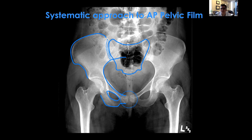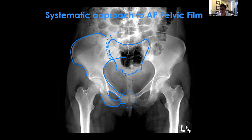También tomo en cuenta la congruencia de las líneas iliopectineal e ilioisquiática a medida que suben; deberían encontrarse con la parte inferior del segundo neuroforamen sacro. Si no se alinean, eso podría indicar migración vertical de la hemipelvis. Finalmente busco la fractura de la apófisis transversa de L5: si está avulsionada, es señal de que hubo mucho más desplazamiento en algún momento. Así se aborda una radiografía de pelvis observando el anillo pélvico.